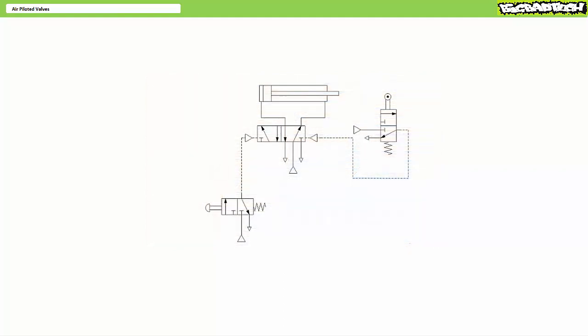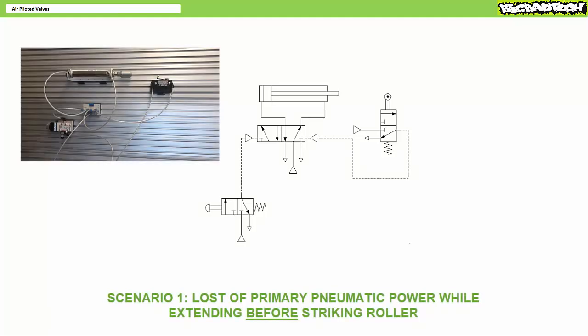Let's explore a couple of scenarios using this air piloted system, keeping in mind memory and priority. Scenario one: an operator presses and releases push button one. The air pilot on the left-hand side shifts the valve so the cylinder extends. While extending and before striking the roller valve, the whole plant suddenly goes dark — pressure in the pneumatic source drops to zero and all air flow stops, primary and pilot. Most likely the cylinder comes to a stop midway between extension and retraction.